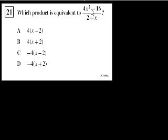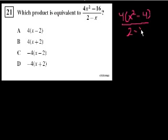4x squared minus 16. If we factor out a 4, that's the same thing as 4 times x squared minus 4. Right? That's 4x squared minus 16, all of that over 2 minus x.